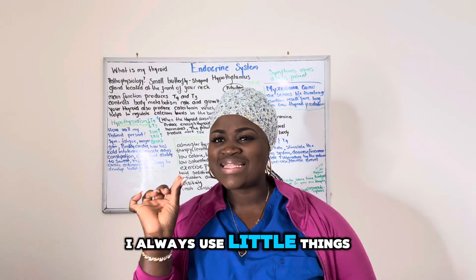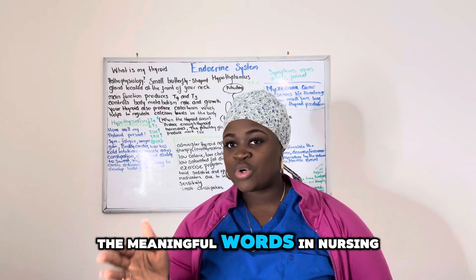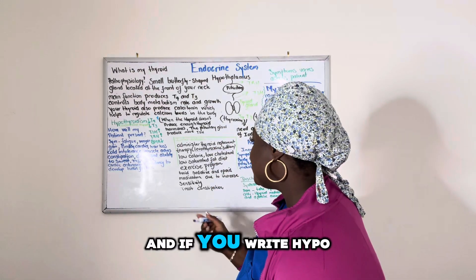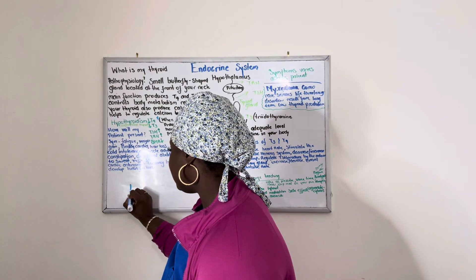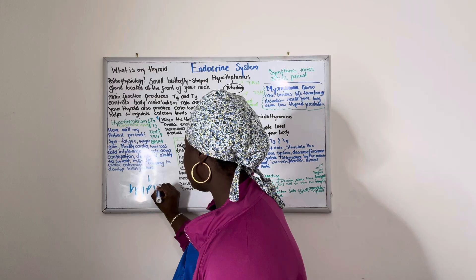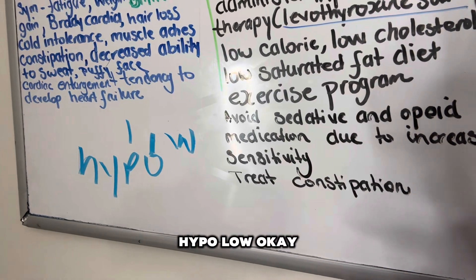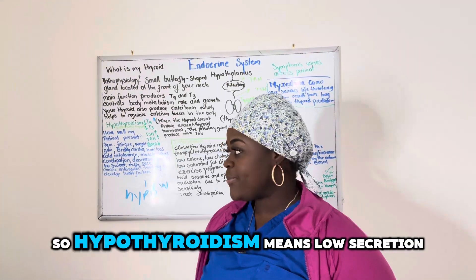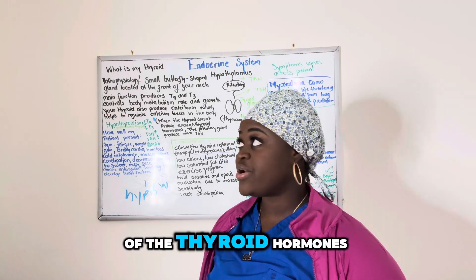I always use little things to try and remember the meaning of words in nursing, because there are a lot of words. If you write 'hypo' and you write 'low' — H-Y-P-O, low — that's a good way to remember it. So hypothyroidism means low secretion of the thyroid hormone.